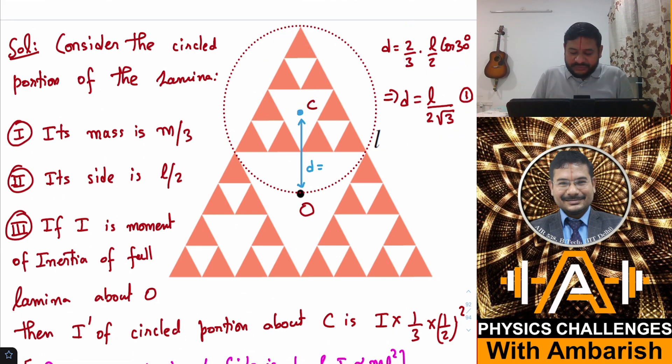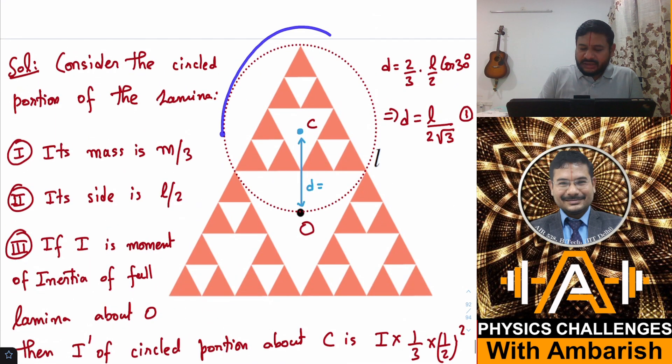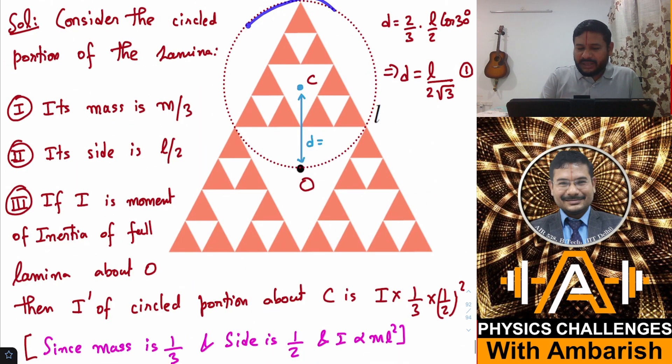By parallel axis theorem, moment of inertia of the smaller triangle about O becomes I' = I/12 + (m/3)d². This is just parallel axis theorem. Mass is m/3 and distance is d, and d is L/(2√3).